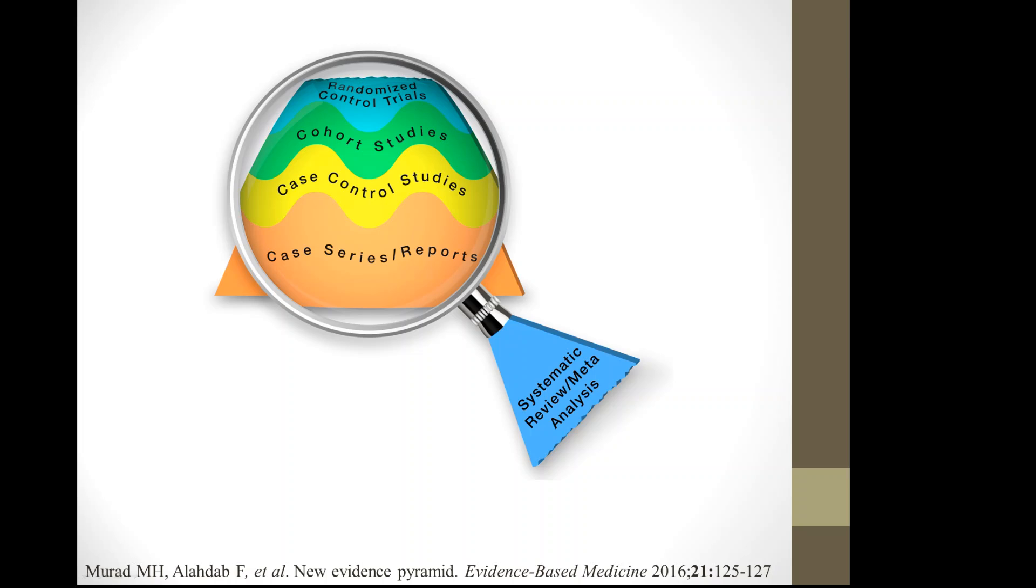This pyramid can also be used as a teaching tool. EBM teachers can compare it to the existing pyramids to explain how certainty in the evidence, also called quality of evidence, is evaluated. It can be used to teach how evidence-based practitioners can appraise and apply systematic reviews in practice, and to demonstrate the evolution of EBM thinking and modern understanding of certainty in the evidence.